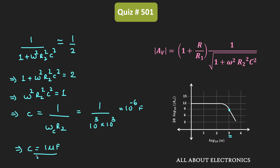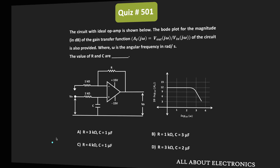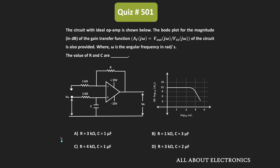So in this way we got the values of R and C. R equals 3 kΩ and C equals 1 μF. This is the correct answer for the given question.